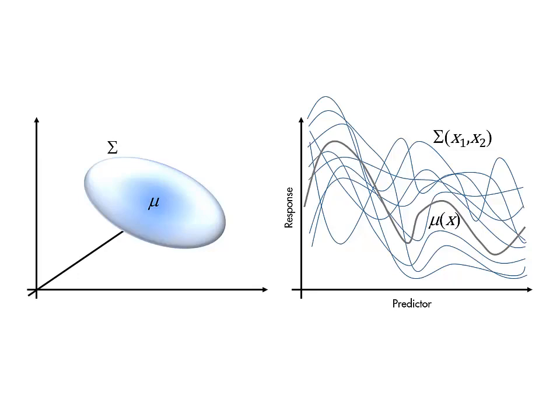For Gaussian process regression, the covariance function is determined by a chosen kernel function that describes how much influence one point has on another. This effectively determines the smoothness of the functions in the distribution.